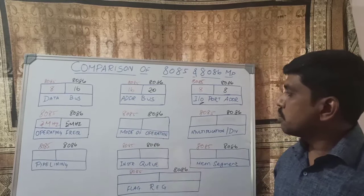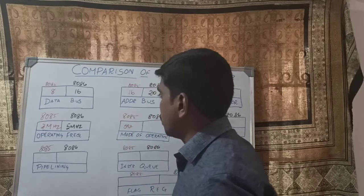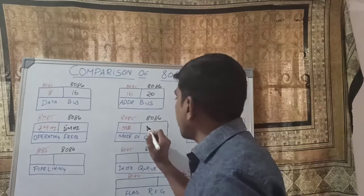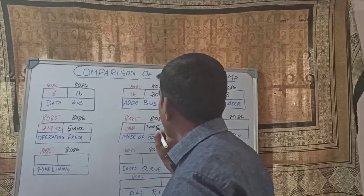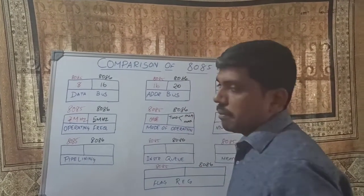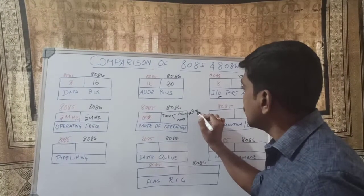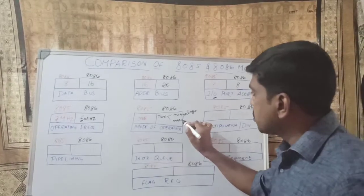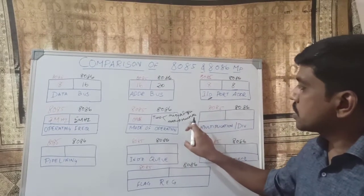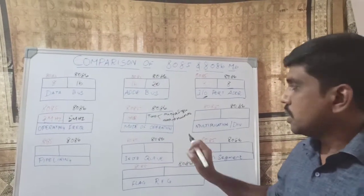The next property is mode of operation. The 8085 microprocessor operates in only one mode — single mode operation. But the 8086 microprocessor operates in two modes: minimum mode and maximum mode. Minimum mode represents a single processor configuration, while maximum mode represents a multiple processor configuration.